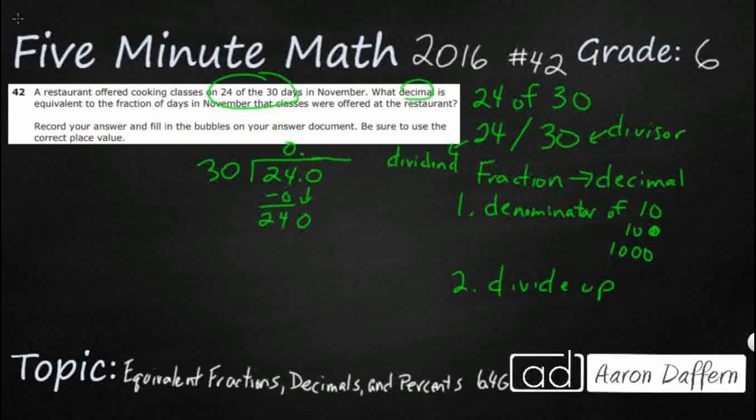Well, I don't know my 30s facts. So, you probably don't either. But, we can just take a look at, you got a 0 here and a 0 here. So, let's just ignore both of those zeros. And let's just look at 3 and 24. Well, 3 and 24, that's pretty simple. That's 8.